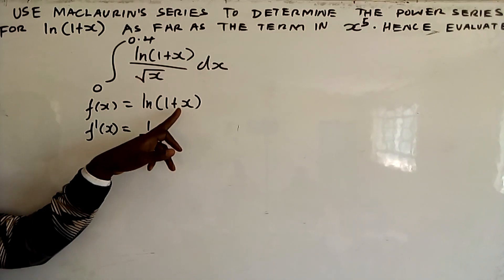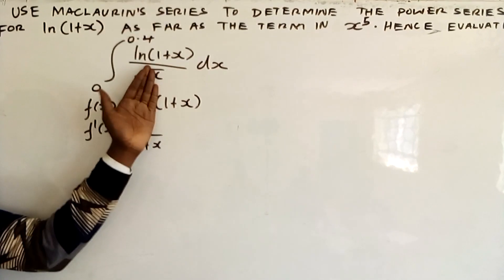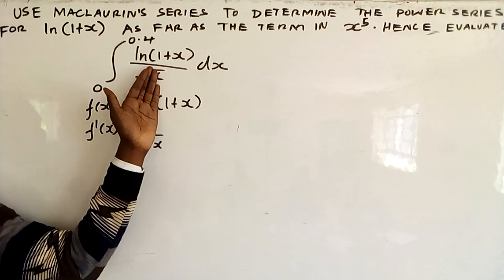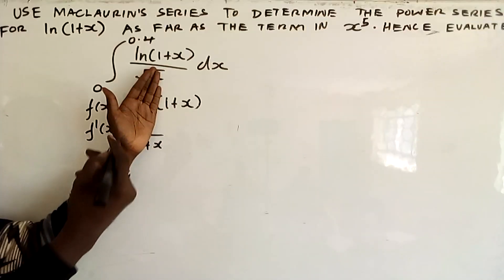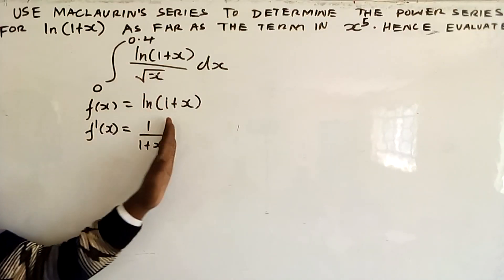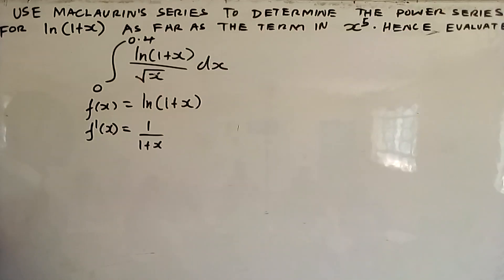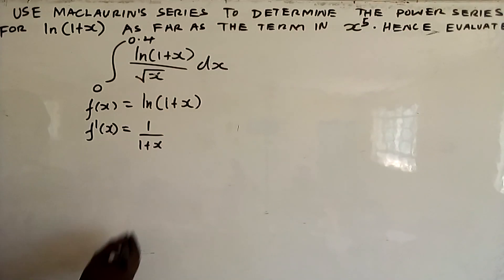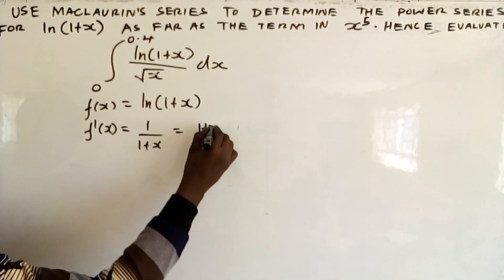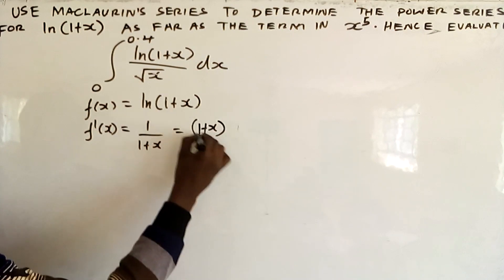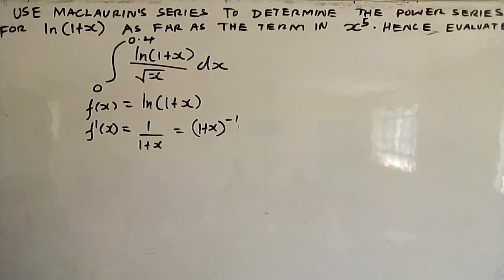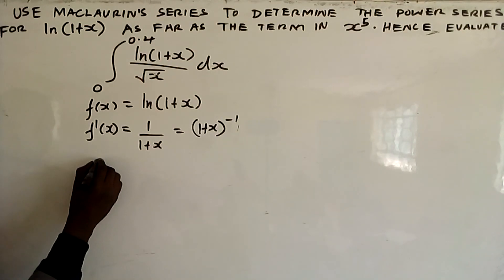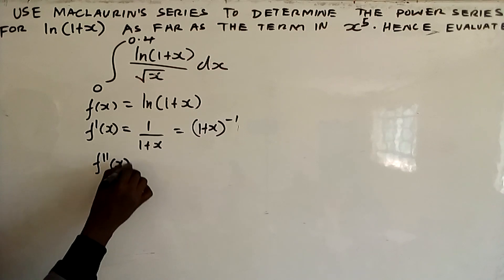Then you differentiate the inner function, which is (1+x), and you get 1. Differentiating 1 is 0, differentiating x is 1. So it is times 1 — it remains the way it is. After that, this can be written in the form (1+x) raised to negative 1.